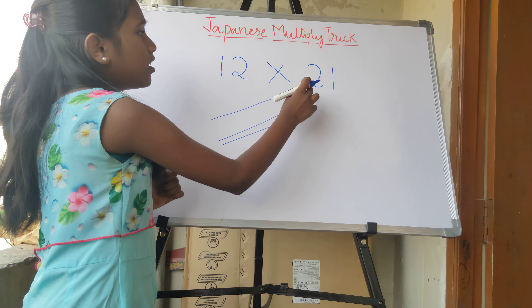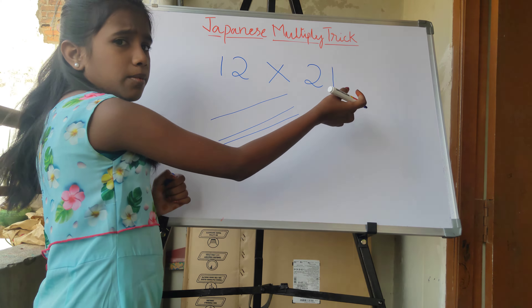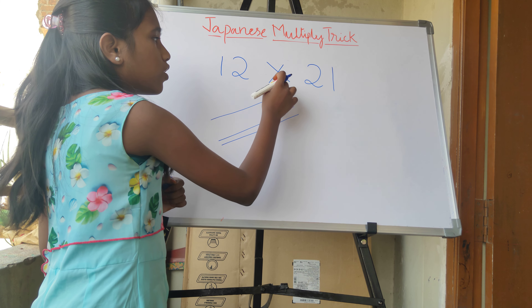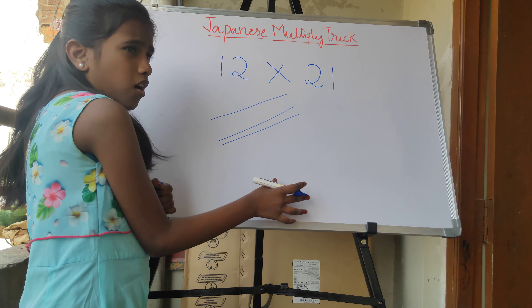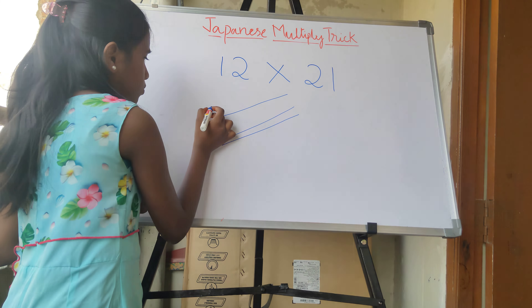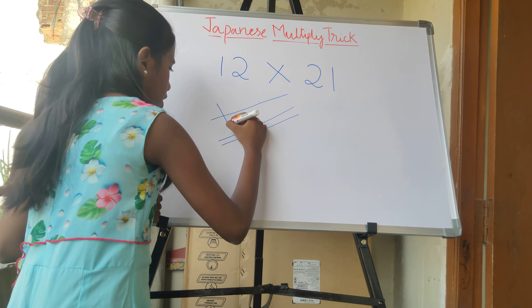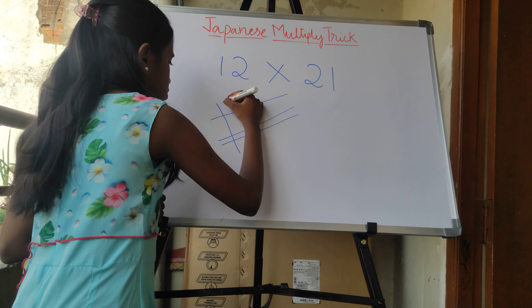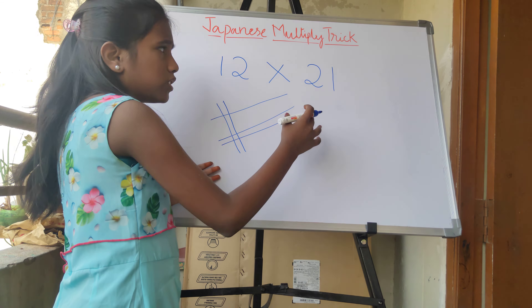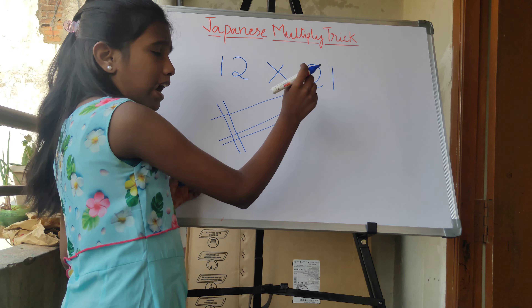Next, the next number is 21, so we have to draw some cross lines: 2 lines. Next, we have to give some gap and draw one line.